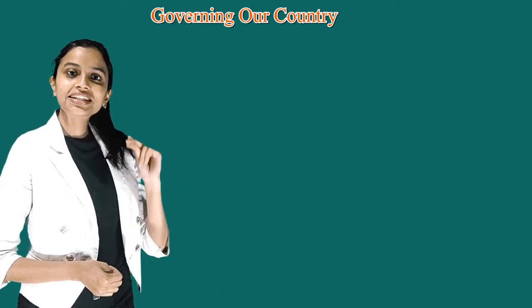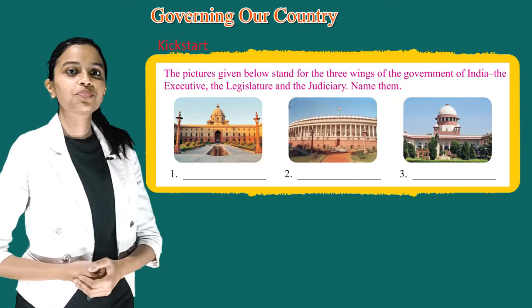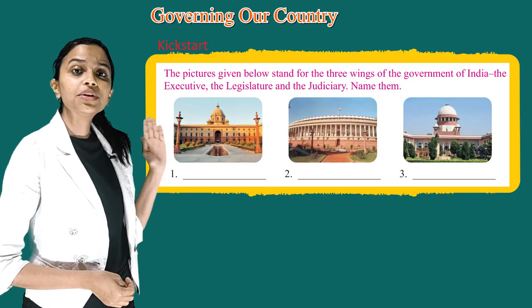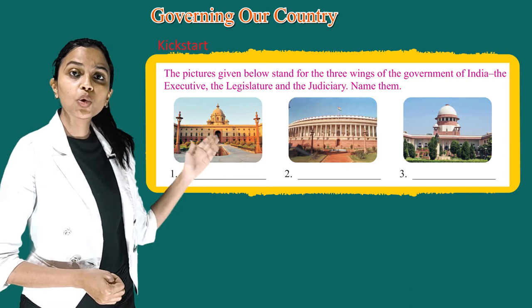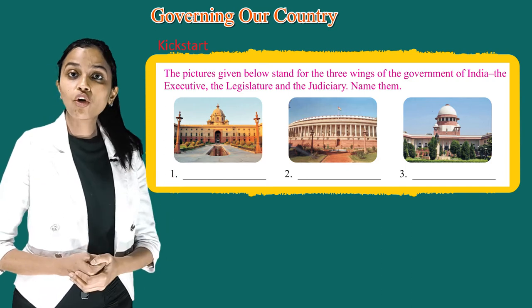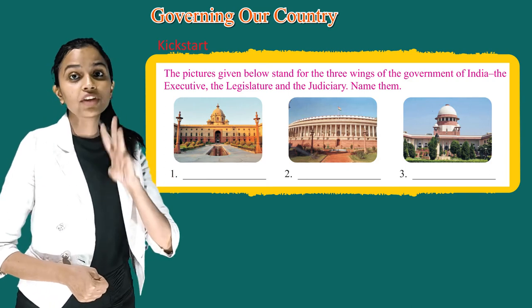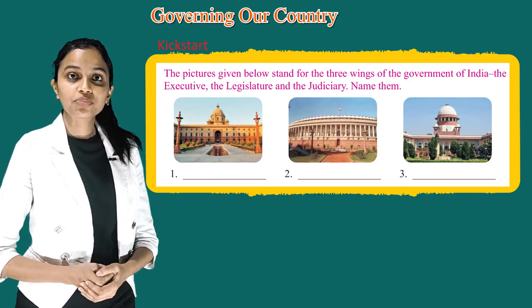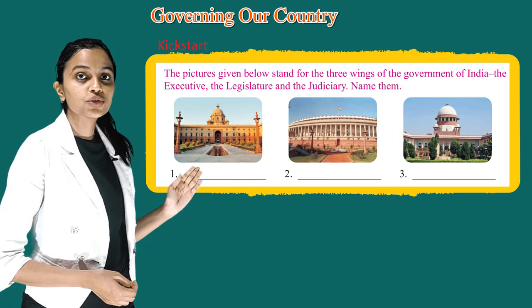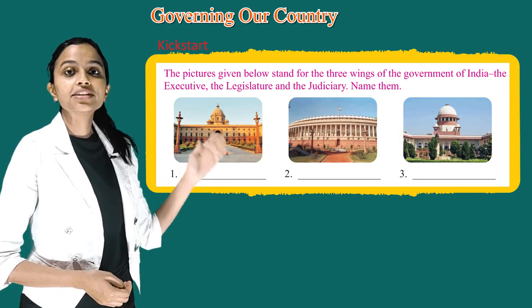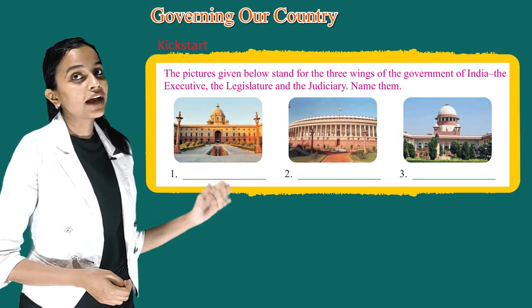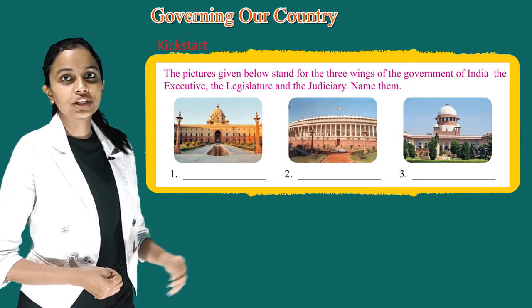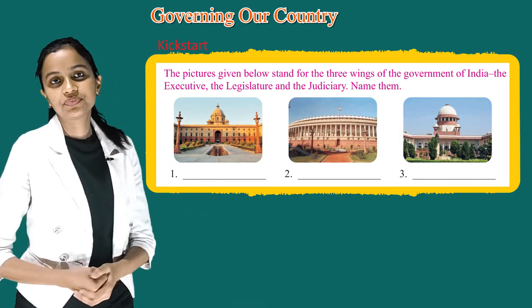So let's kick start. The pictures given below stand for the three wings of the Government of India: the Executive, the Legislature and the Judiciary. Name them.